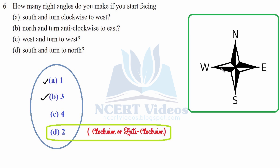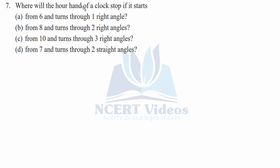Part d: facing south, turn to north. You can go either clockwise or anticlockwise since north is opposite to south, so it is two right angles. The direction didn't matter here, unlike part c where the direction was specified as anticlockwise west. That completes question 6.